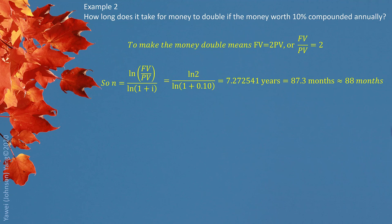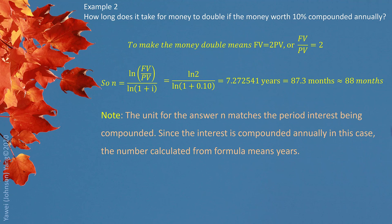7.272541 years, the unit automatically followed years since interest compounded annually. That was from our question background. If we want to switch these years to months, we multiply by 12. Turn out months. And we rounded up 88 months. Here is called rounding up only.